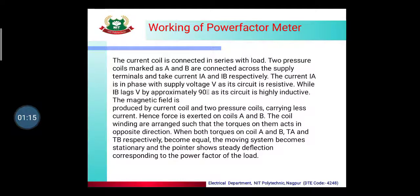Now for working, we will see that the current coil is connected in series with the load. The current IA is in phase with the supply voltage V as its circuit is resistive, while IB lags the voltage by approximately 90 degrees because the circuit is highly inductive.